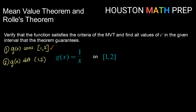Second, g of x is differentiable on the interval 1 to 2. We find the derivative: thinking of g as x to the negative 1 power, g prime of x equals negative 1 times x to the negative 2, or negative 1 over x squared. This derivative exists everywhere except at 0, because 0 would make the denominator 0. So g of x is differentiable everywhere on the interval 1 to 2, and the function satisfies the criteria for the mean value theorem. Now we can find the value of c, or values potentially, that the theorem guarantees.